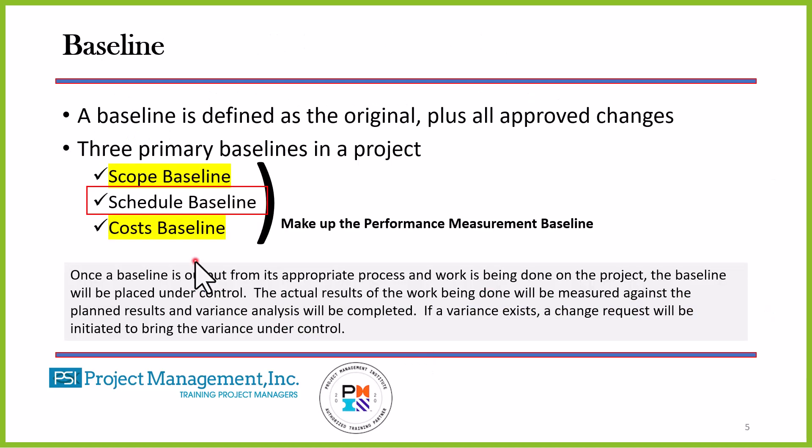This is important: our schedule baseline, which contains the project network diagram as a part of it, is one of the triple constraints — one of the baselines. These three baselines together make up what we call the performance measurement baseline, which tells us how the entire project is performing.